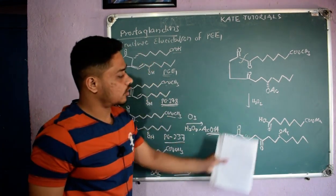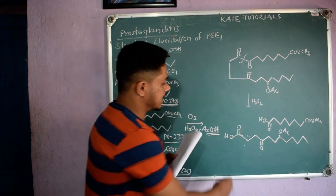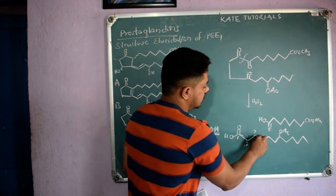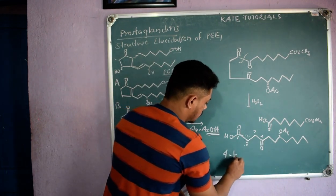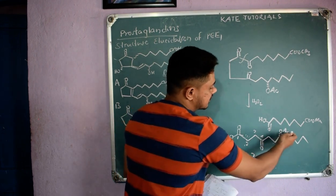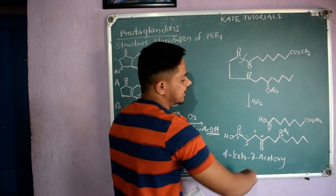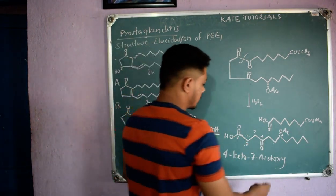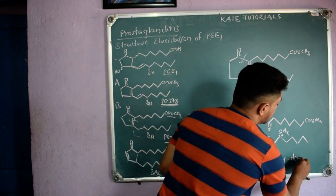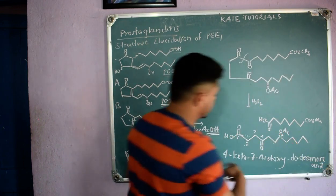When we did ozonolysis we got these two products. To confirm, counting the carbons: one, two, three, four — it is a four-keto compound, written as 4-keto. Position seven has the hydroxy — since it is OAc, it is 7-acetoxy. Counting total carbons: one through twelve — twelve means dodecanoic acid (dodeca = two more than deca).